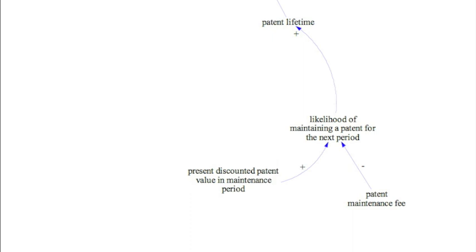Let's now proceed step by step to ask ourselves the causal relationships that we would expect. What is it that determines the likelihood of maintaining a patent for the next period? We could expect the company to compare the present discounted patent value in any given period with the patent maintenance fee. The higher the first, the more likely the company will be to keep the patent, so the higher the likelihood of maintaining a patent for the next period. Again, the positive relationship is represented by a blue arrow with a plus sign.